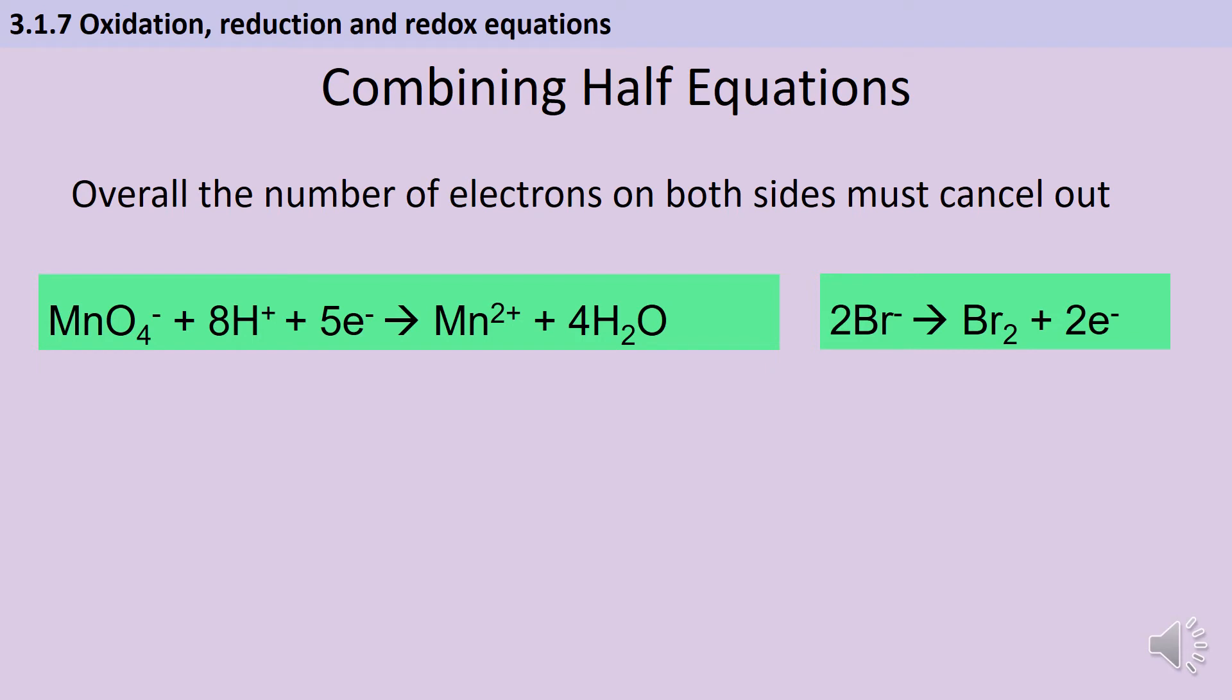So that first example was quite easy because it used more straightforward half equations than the ones we met in the previous video. So now let's look at something that's a little bit more realistic for A-level. So here you've got two half equations, one for the reduction of manganese in manganate ions and one for the oxidation of bromide ions to make bromine. And you can see here that again my electrons don't balance and sorting that out is my first priority. So I look for the lowest common multiple of five and two which in this case is ten and then I multiply everything in each equation to make sure that overall I have ten electrons.